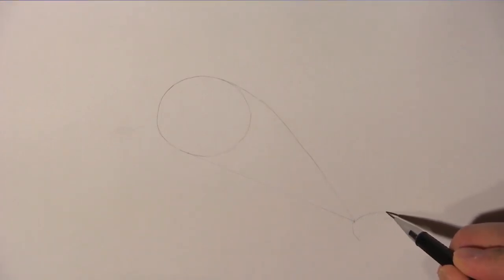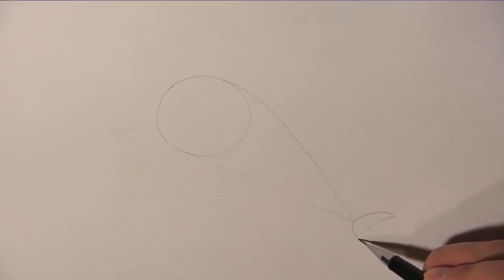Now draw a waning crescent moon shape here for the dolphin's tail fluke. Now we can start drawing.